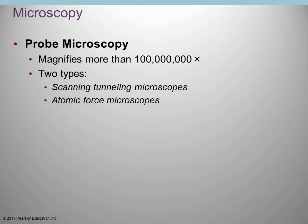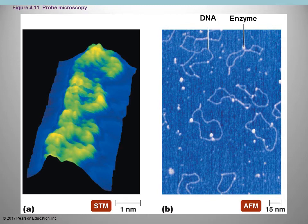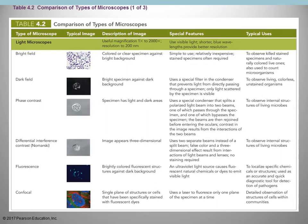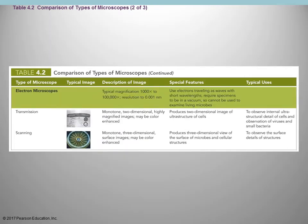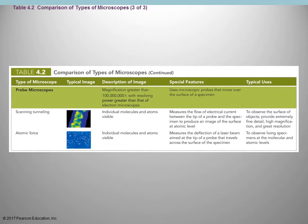Probe microscopy will magnify more than 100 million times, allowing you to see very small structures. There are two types: scanning tunneling and atomic force. You get nice three-dimensional images, and you can see the DNA strand and even an enzyme. A comparison table shows the different types of microscopes — starting with light microscopes, progressing to electron microscopes, and finally to probe microscopes — with their special features and example applications.